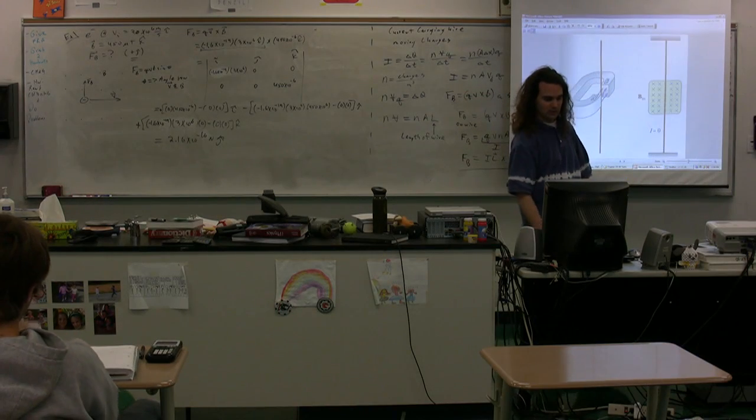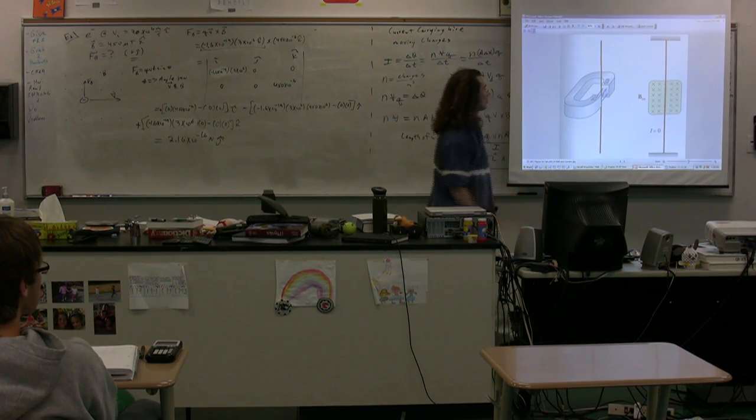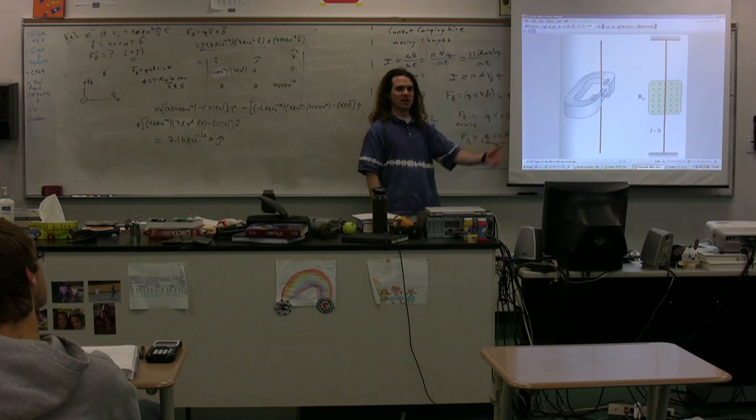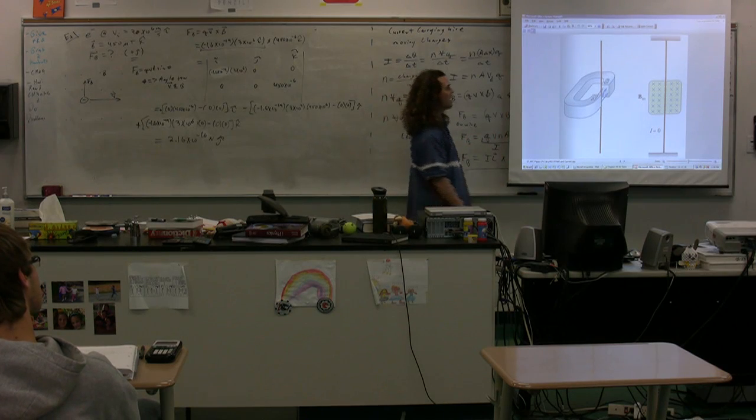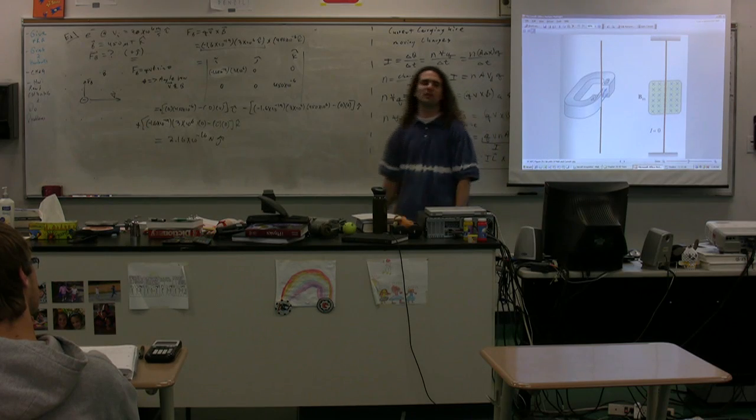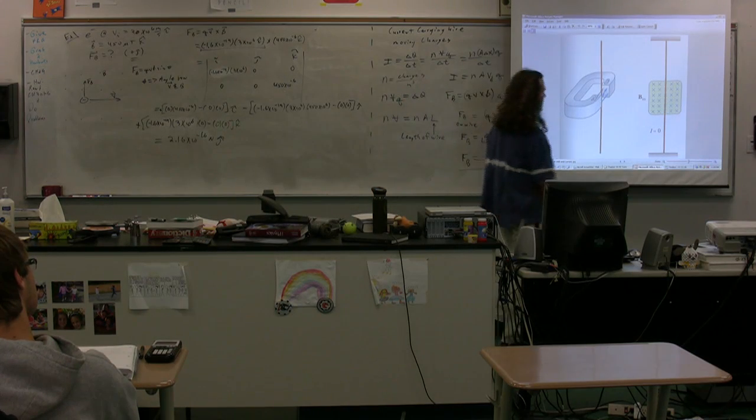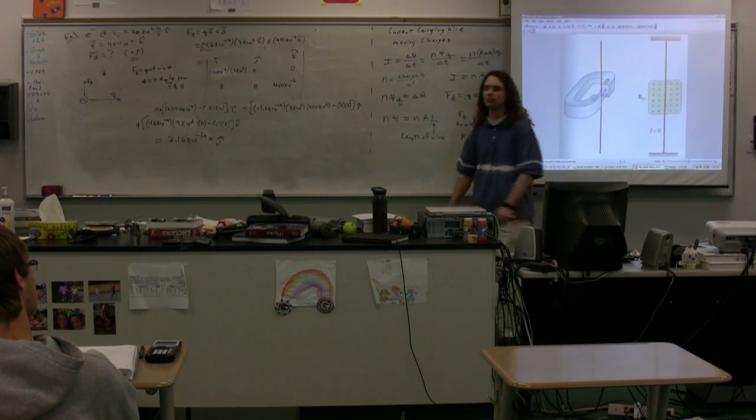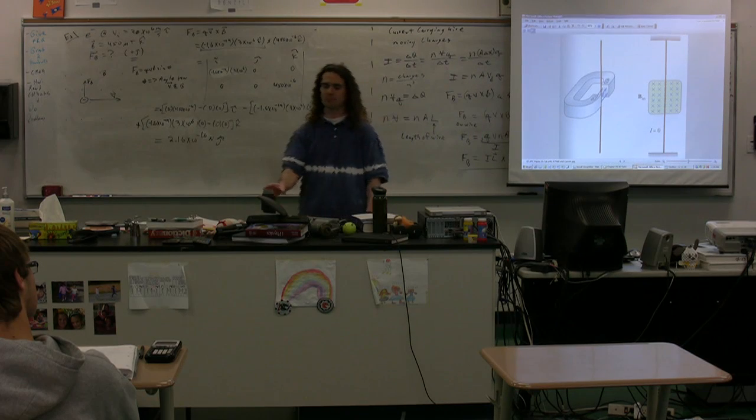So, we come back to pictures. We have a current-carrying wire at the moment. Not a current-carrying wire. It has zero current. It's in a magnetic field, you can see, is into the page. If the current were going up, figure out the direction of the force on the wire. Please.